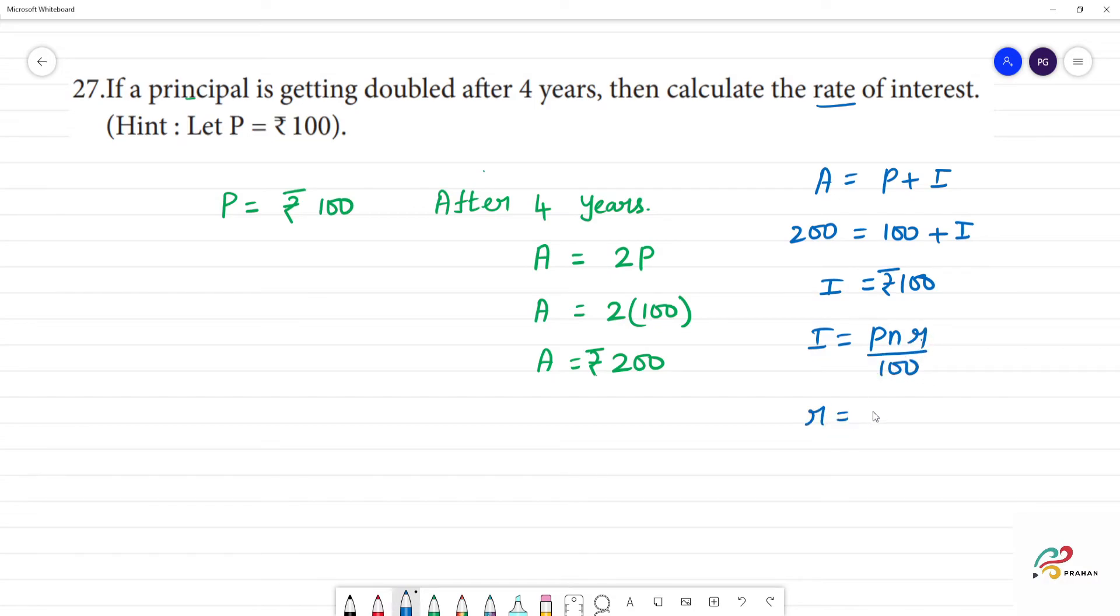We know that I is equal to 100 rupees. So r is equal to I into 100 divided by P into n.